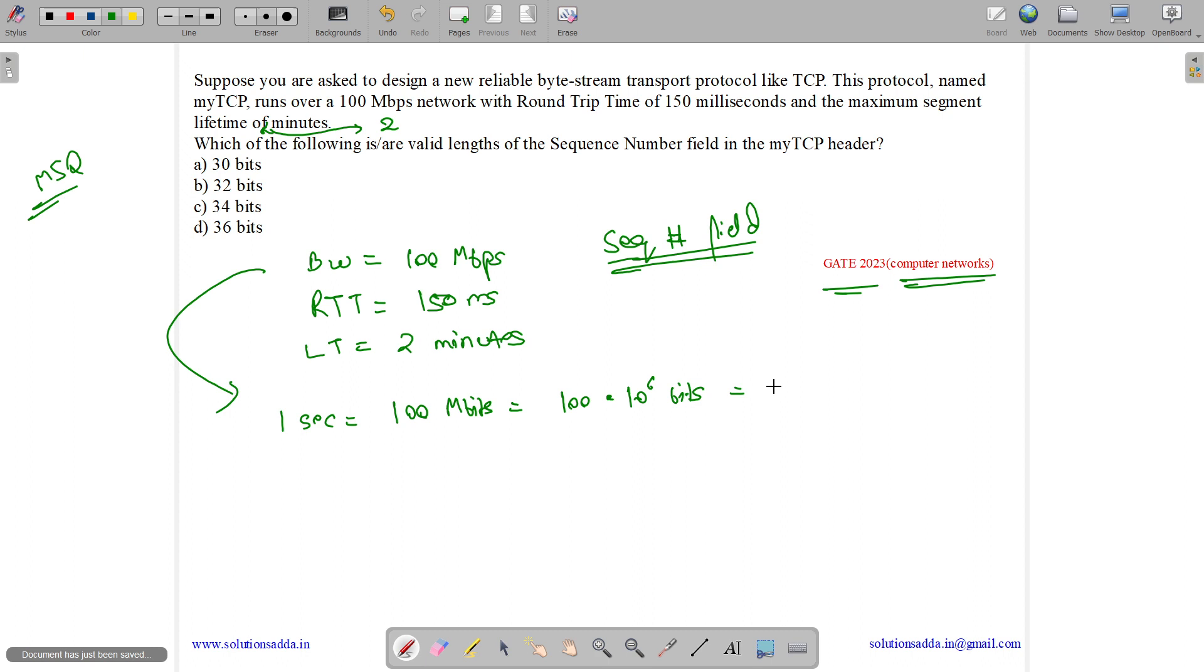If we convert it into bytes, we need to divide by 8. So 100 × 10^6 ÷ 8 equals 12.5 × 10^6 bytes, or 125 × 10^5 bytes. We are transferring 125 × 10^5 bytes in one second.